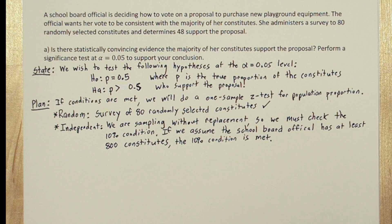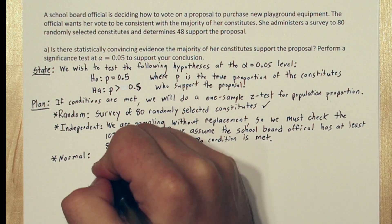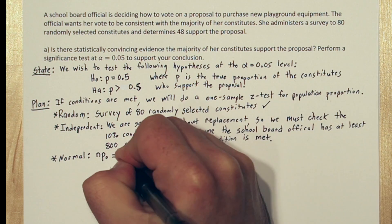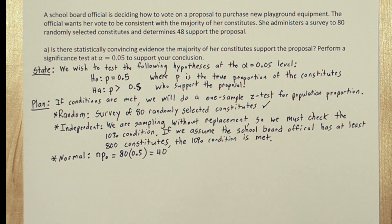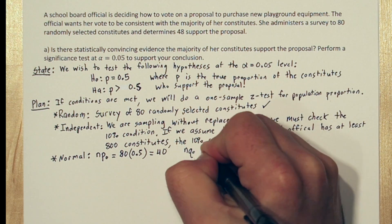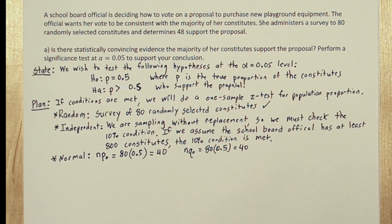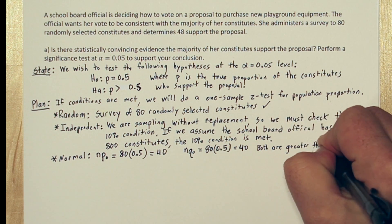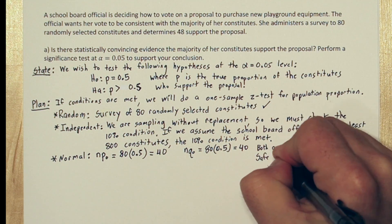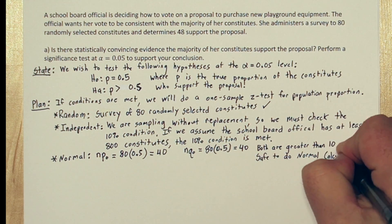For the normal condition, we're going to assume the null hypothesis is true, and if that's the case, the true proportion of constituents who support the proposal is 0.5. So n times p sub 0, the null hypothesis proportion, is 80 times 0.5, that's 40. n times q sub 0, which is the complement of p sub 0, is also 40. So since both of these are greater than 10, it's safe to do normal calculations.